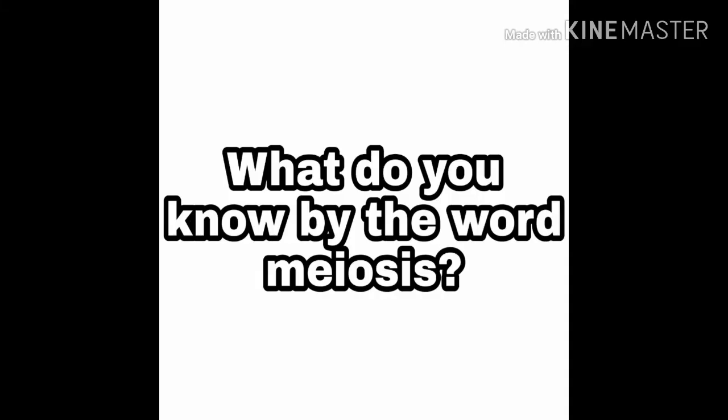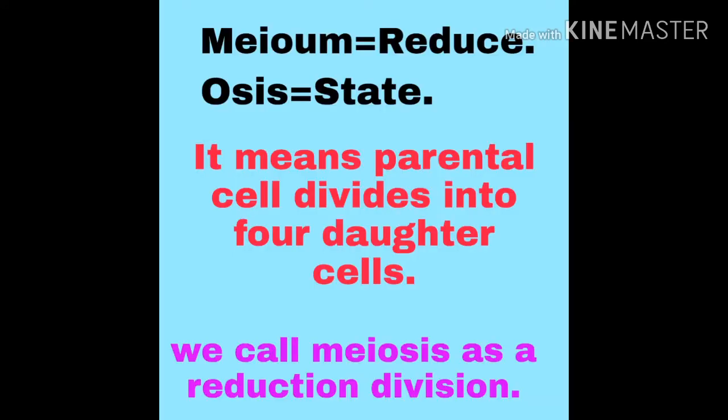First of all, what do you know by the word meiosis? 'Meion' means reduction, 'osis' means state. It means the parental cell divides into four daughter cells — मतलब एक parent cell से चारों daughter cells में आधे-आधे chromosome जाएंगे।